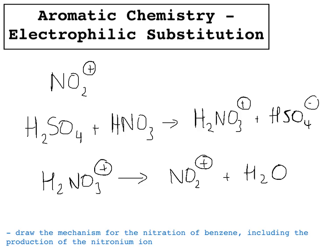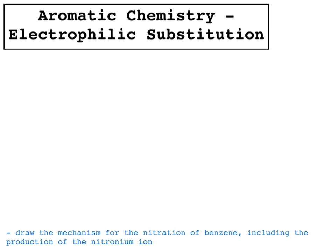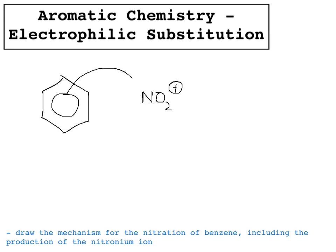The mechanism involves that nitronium ion reacting with a benzene ring. It doesn't matter what else is on the benzene ring — it will still react. The electrons are in the benzene ring, so the arrow is going to go from the ring to the NO2+. Remember, arrows always go from where there are electrons to what needs the electrons. So it goes from the benzene ring to the nitrogen, because that's what's going to be bonded to the benzene.